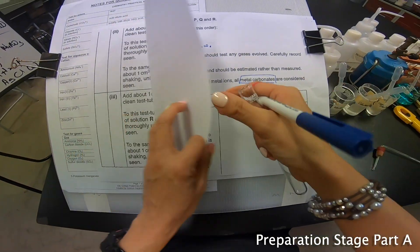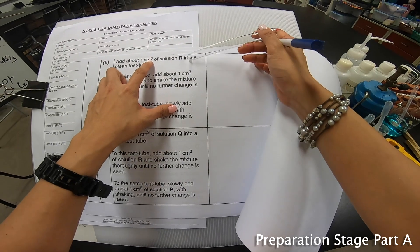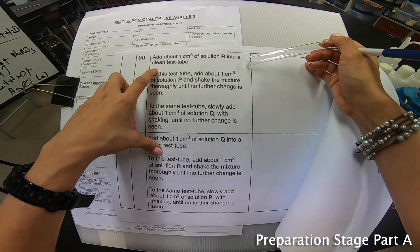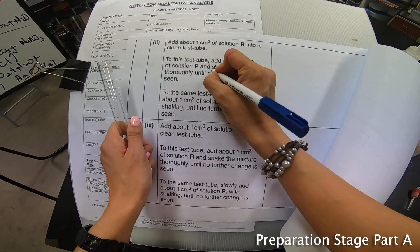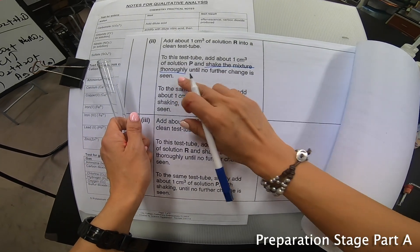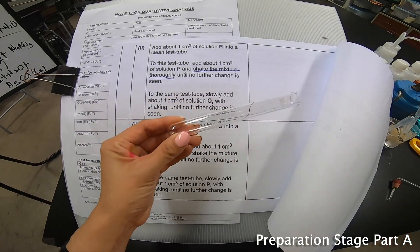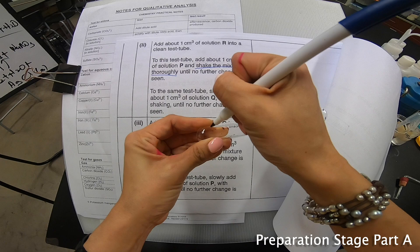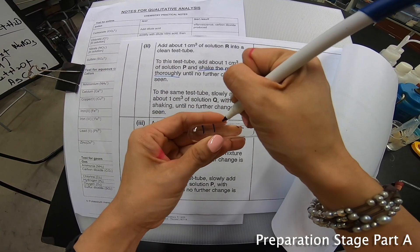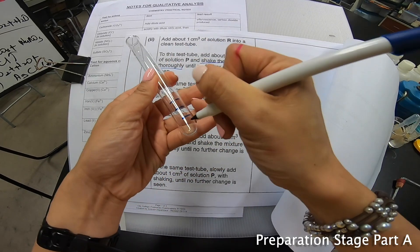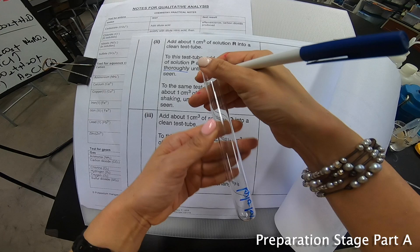Now, remember, all these are estimated. This is A part 1. I make sure that I label A part 1. Label nicely and let's put it back. Let's move on to the second page then. Now, the second page goes on to say that add about 1 cm³ of R into a clean test tube. And then to this test tube, add about 1 cm³ of solution P. Shake the mixture thoroughly until no further change is seen. And to the same test tube, add about 1 cm³ of solution Q.